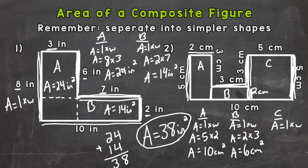Lastly, for C we have a square — a 5 by 5 square. So our length is 5 and our width is 5, and our area is going to be 25 square centimeters.